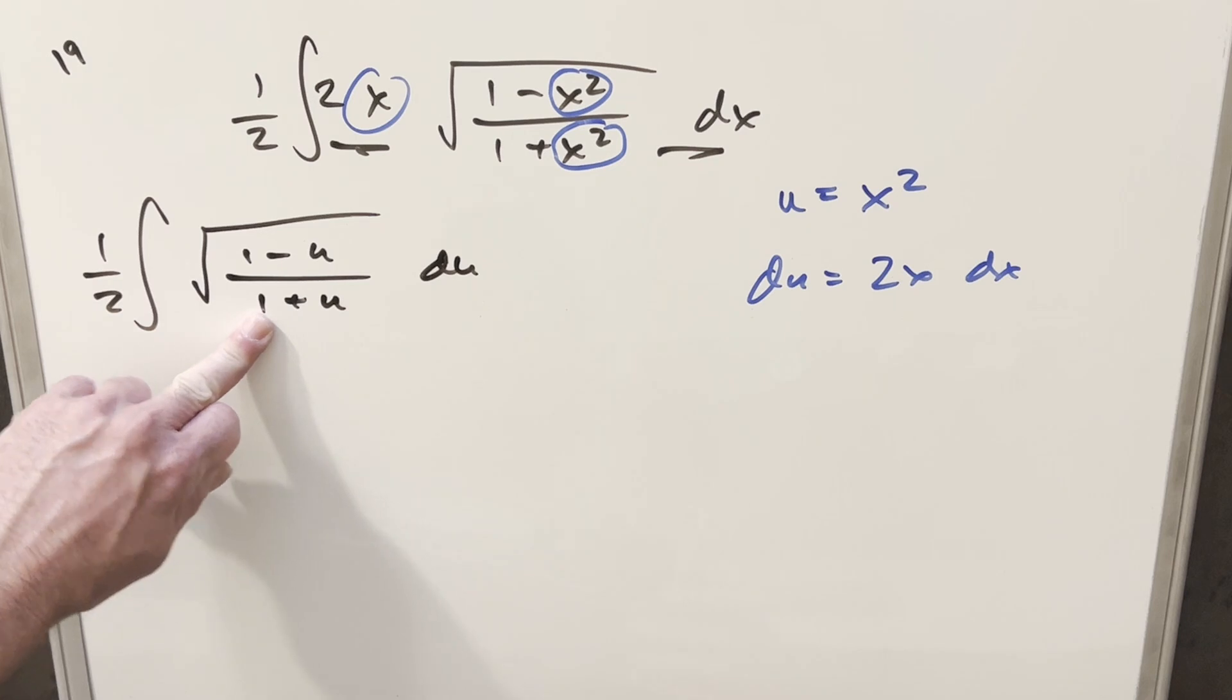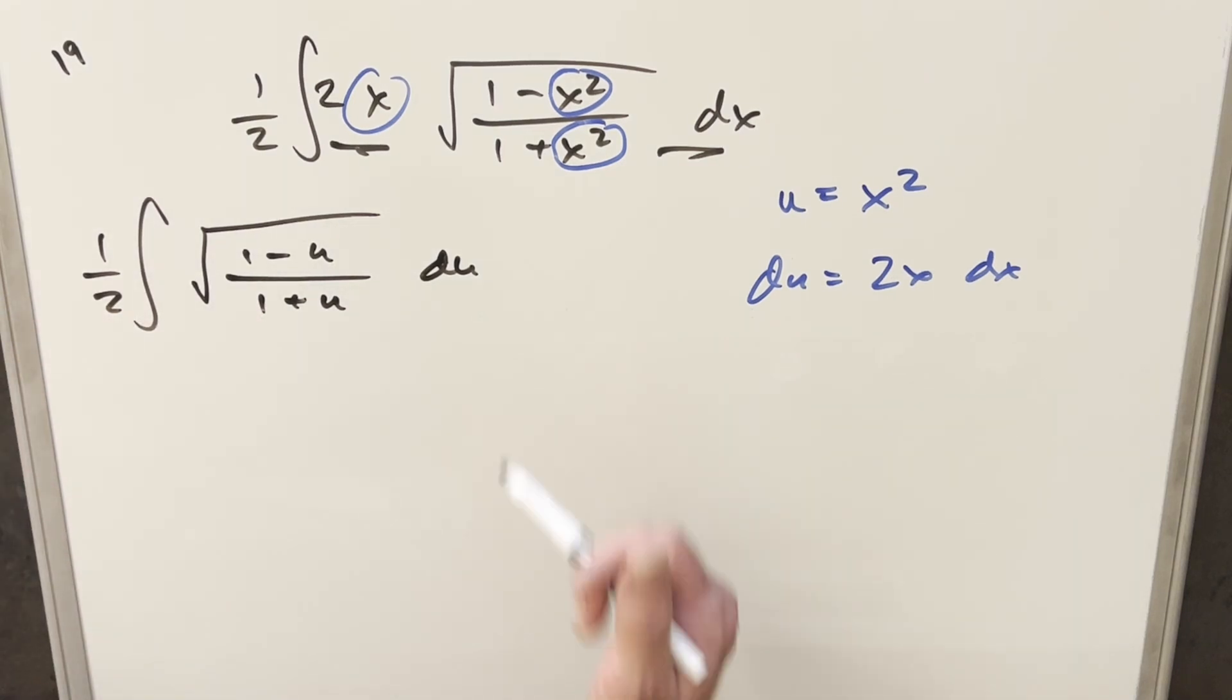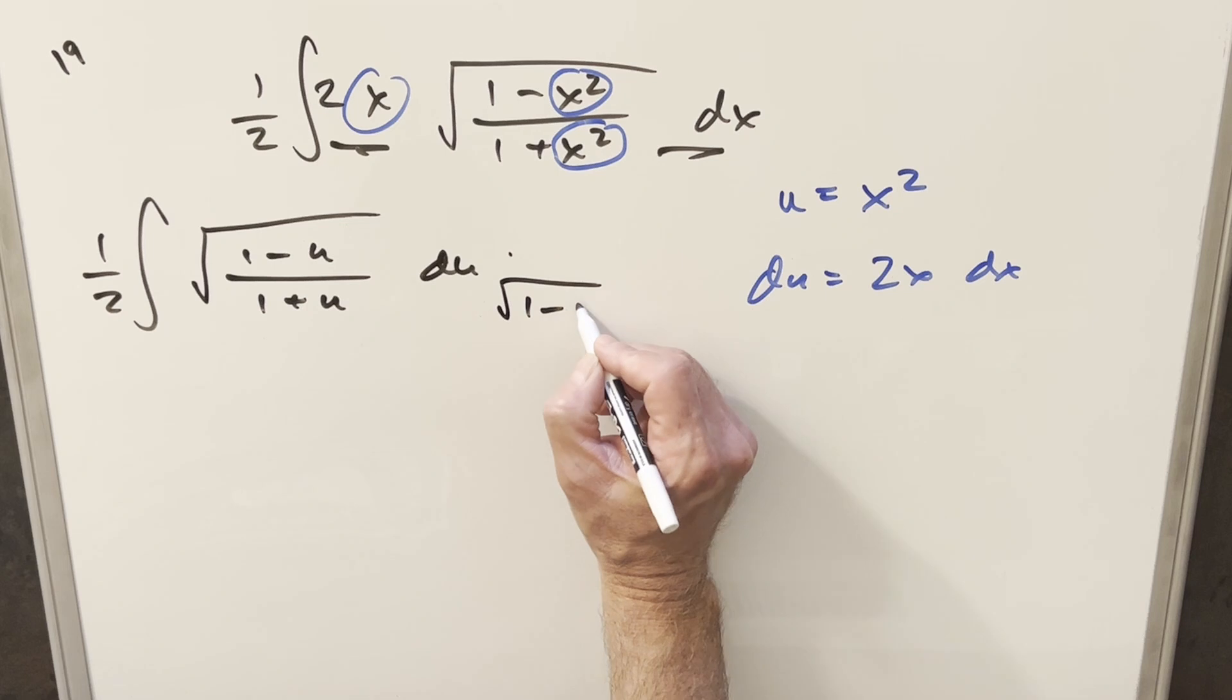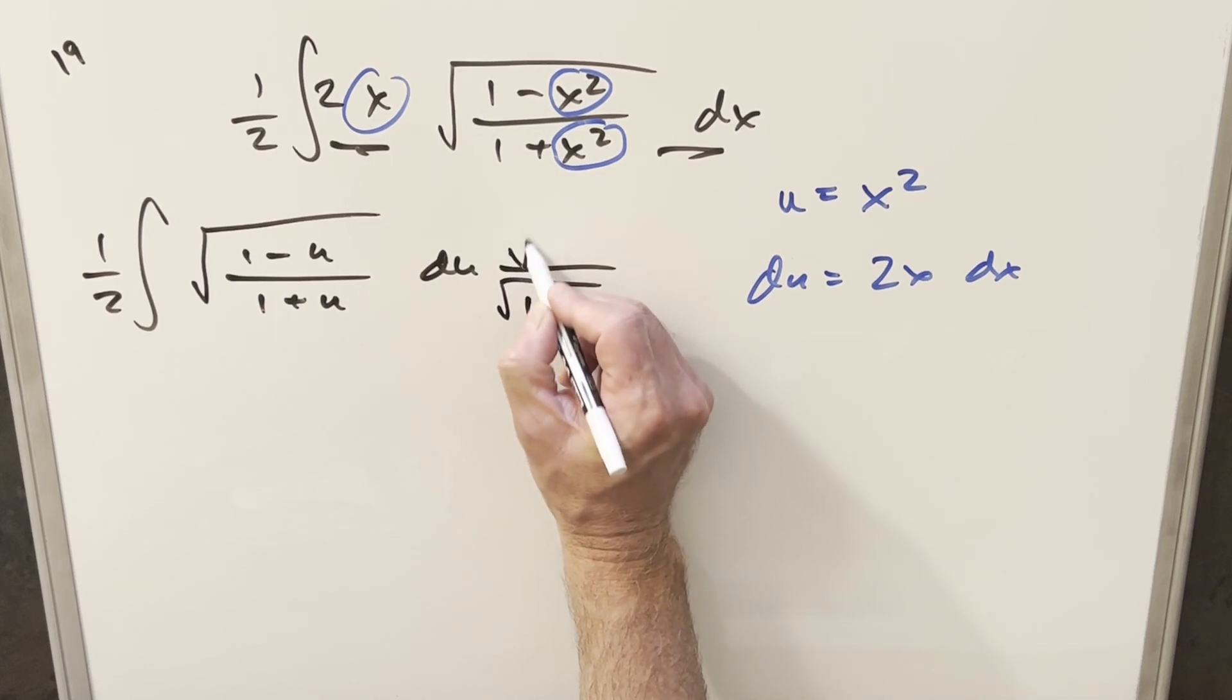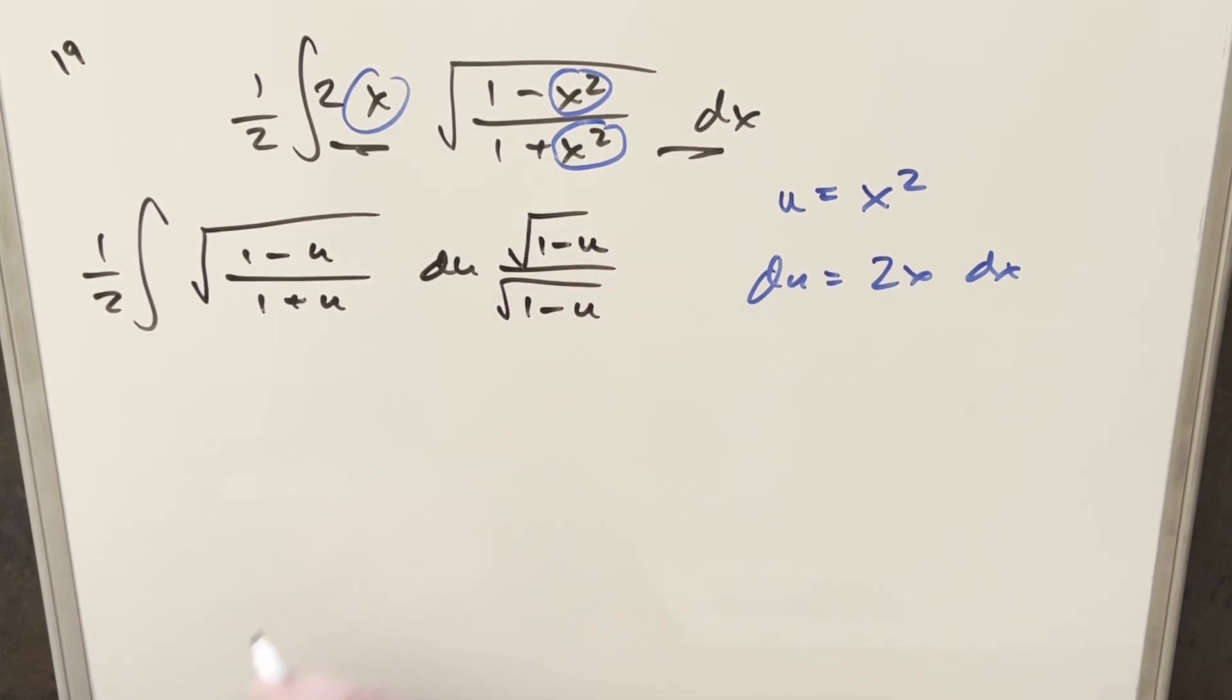Then for this, I feel like I did either this exact integral or something really similar to it recently. What I want to do is just multiply by the conjugate. I'll multiply by the square root of 1 minus u over the square root of 1 minus u.